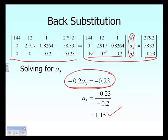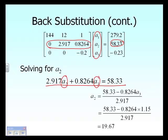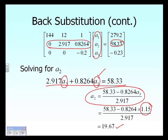The next step of back substitution uses the second equation. Although it appears to have two unknowns — a sub two and a sub three — a sub three was already found. We move it to the right-hand side, substitute a sub three equal to 1.15, and solve for a sub two, which gives 19.67.